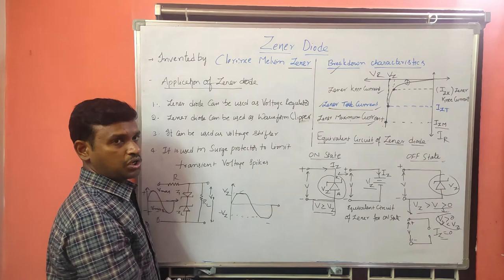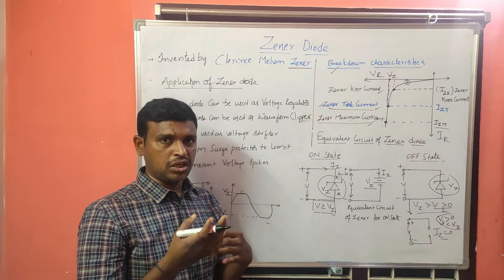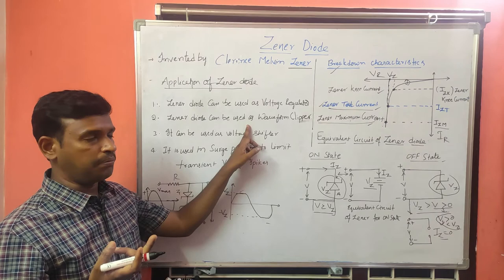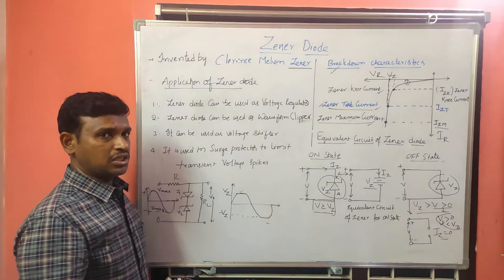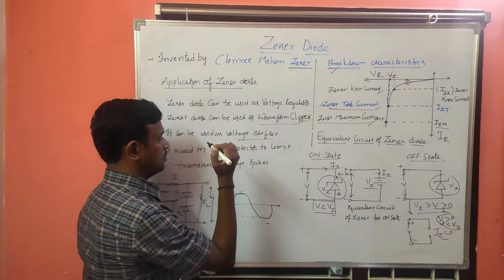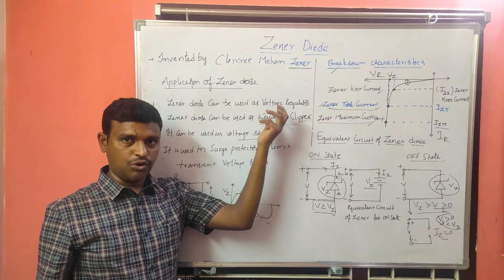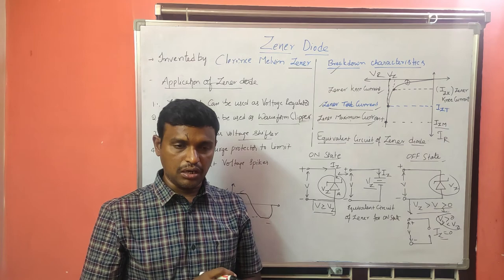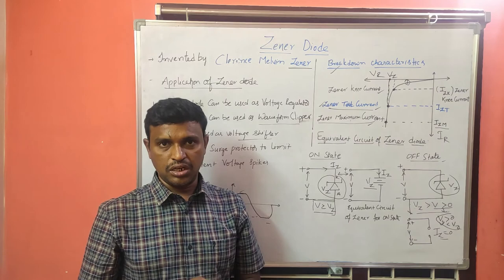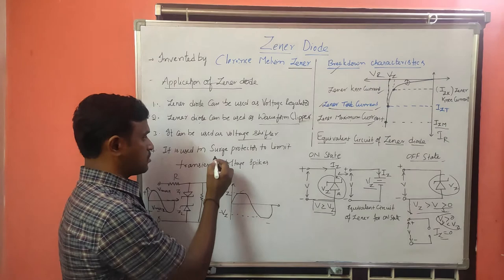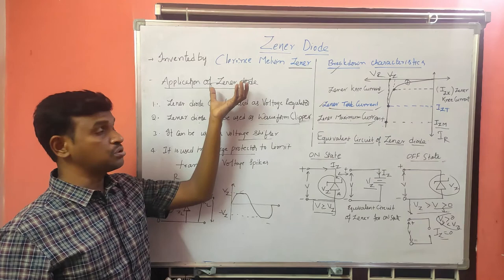Next, the GINA diode can be used as a voltage shifter. The PN junction diode has different applications like waveform clipper and voltage shifter, and similarly the GINA diode also has those applications. Another important application is that because we use it as a voltage regulator, we can limit any spikes or variations coming from external voltages to protect our devices from surge protectors — so the GINA diode is used in surge protectors.